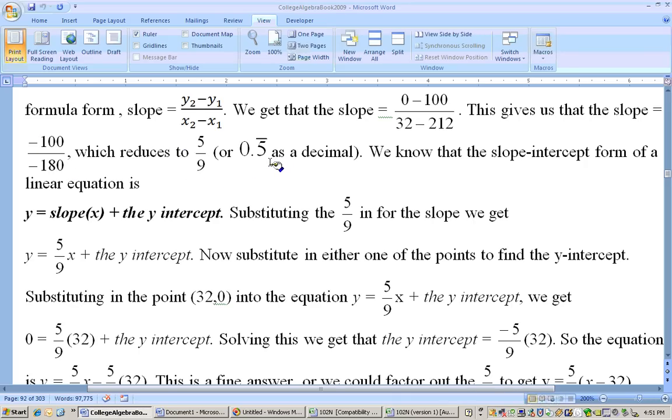whereas the decimal 0.5 bar, the bar meaning that it goes on forever, the decimal, if you want to write it as a decimal.